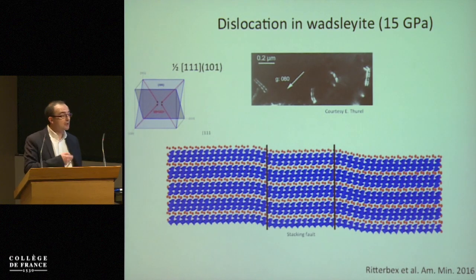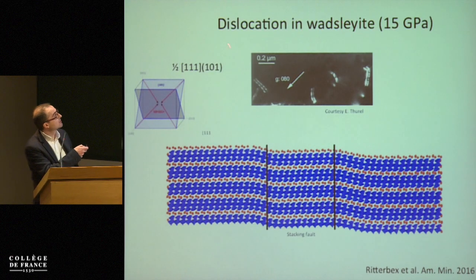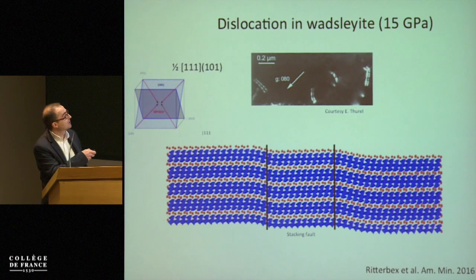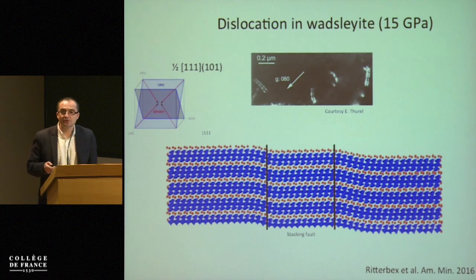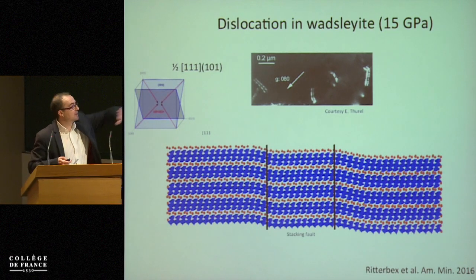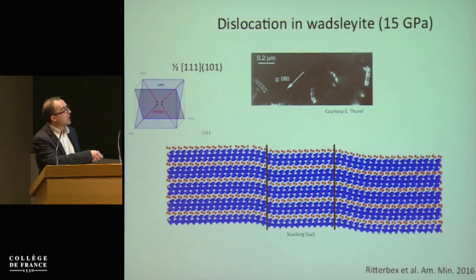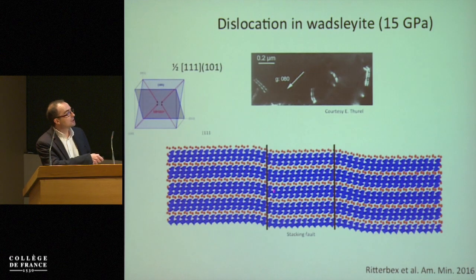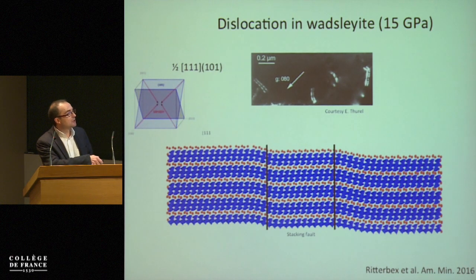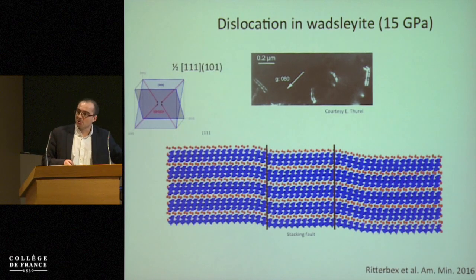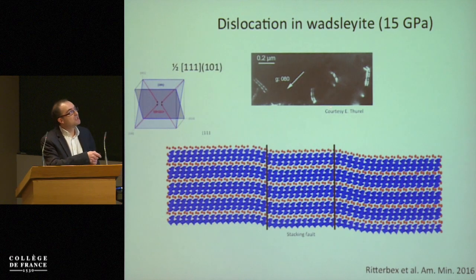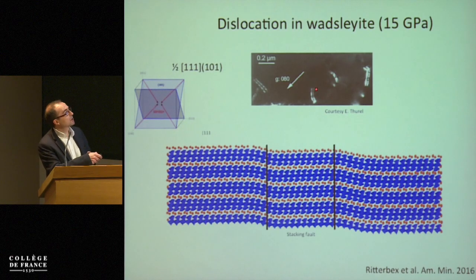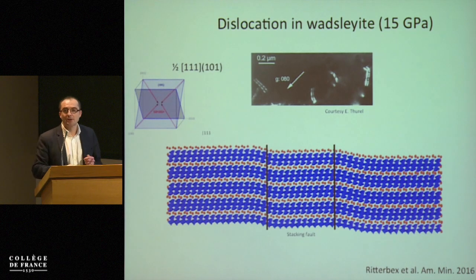Here is a first example of a dislocation core — it comes from a dislocation in wadsleyite. You see the Burgers vector, the glide plane, and the atomic arrangement of the dislocation in its glide plane. The arrangements are rather complex: we have dissociation into two partial dislocations with a stacking fault in between. This is exactly what we see in TEM micrographs — the same dislocation in TEM reveals two contrasts, corresponding to the two partials.